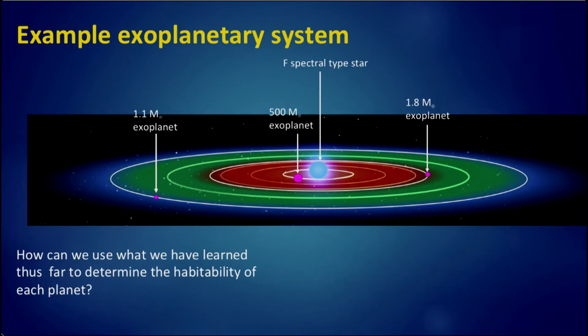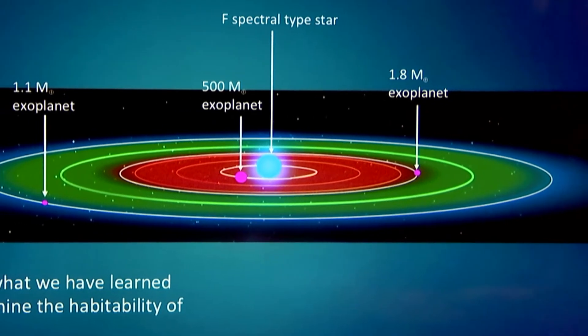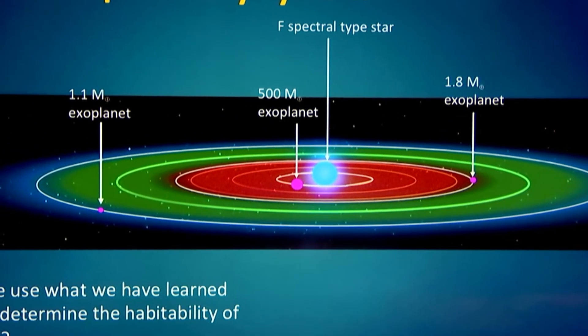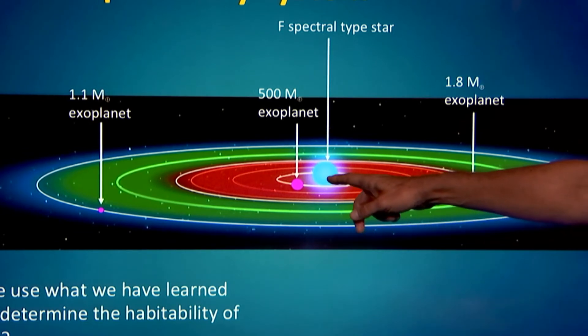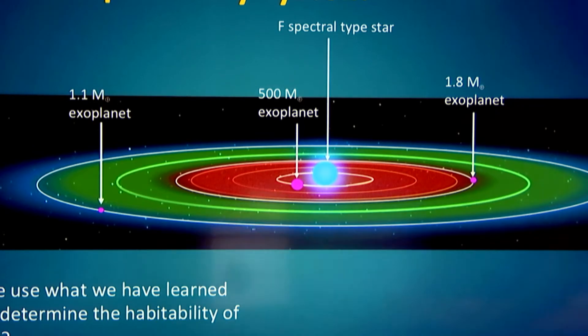Let's take an example exoplanetary system. Let's imagine an F spectral type star, one slightly more massive, bluer, and hotter than the Sun, so its habitable zone is slightly further out. Let's imagine a hypothetical super-Earth on the inside edge of the habitable zone, an almost truly Earth-like planet at the outer edge or beyond, and a hot Jupiter orbiting very close to the parent star. What can we say about such planets?